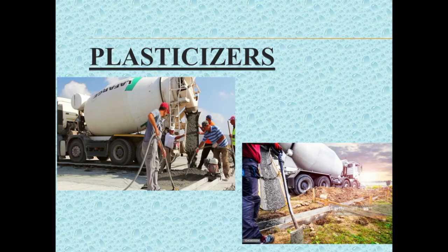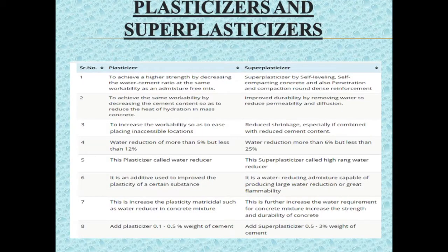Superplasticizers constitute a relatively new category and improved version of plasticizers. Their use was developed in Japan and Germany during the 1960s and 1970s respectively. They are chemically different from normal plasticizers. Use of superplasticizers permits the reduction of water content up to 30% without reducing workability, in contrast to the possible reduction of up to 15% in the case of plasticizers.